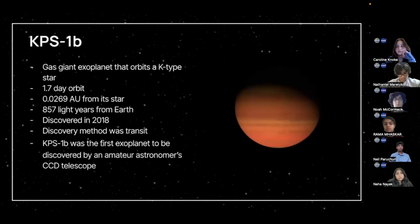Now, lastly, we studied KPS-1b. It is also a gas giant planet, and it also, like Qatar-6b, orbits a K-type star. It has a 1.7-day orbit. It is 0.0269 AU from its star. It is 857 light-years from Earth, and it was discovered in 2019, also due to transit, by an amateur astronomer who was using CCD telescope, which is a very affordable and available telescope for most people to use.